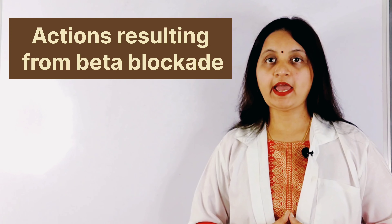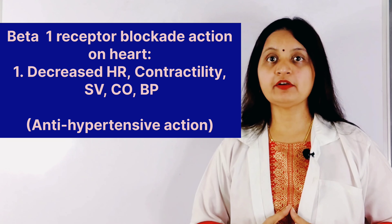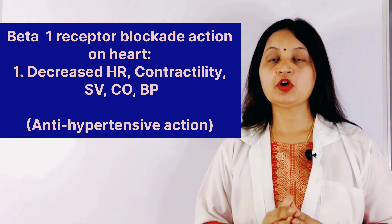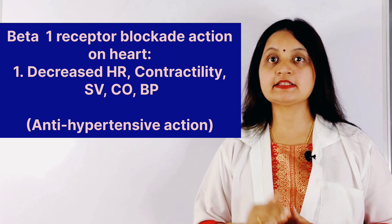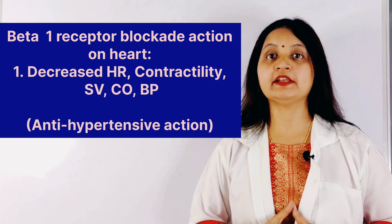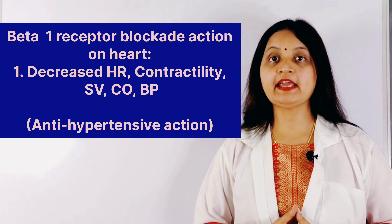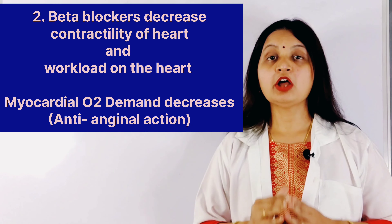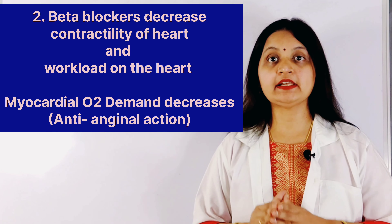Some of the beta blocking actions are as follows. Beta 1 receptor blockade action on the heart: stimulation of beta 1 receptors of the heart results in increased contractility and increased heart rate. So by blocking the beta 1 receptors, the heart rate and contractility decrease, decreasing the stroke volume and cardiac output. This is one of the important mechanisms for the reduction of blood pressure, and therefore beta blockers are used as antihypertensive agents. By decreasing the contractility of the heart, the workload on the heart decreases, explaining the use of beta blockers as anti-anginal agents.